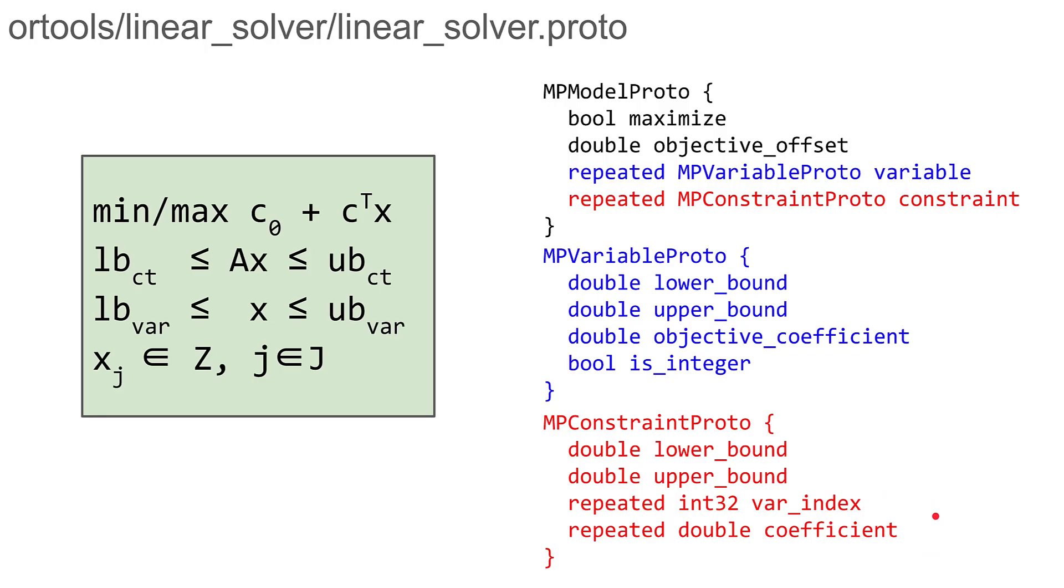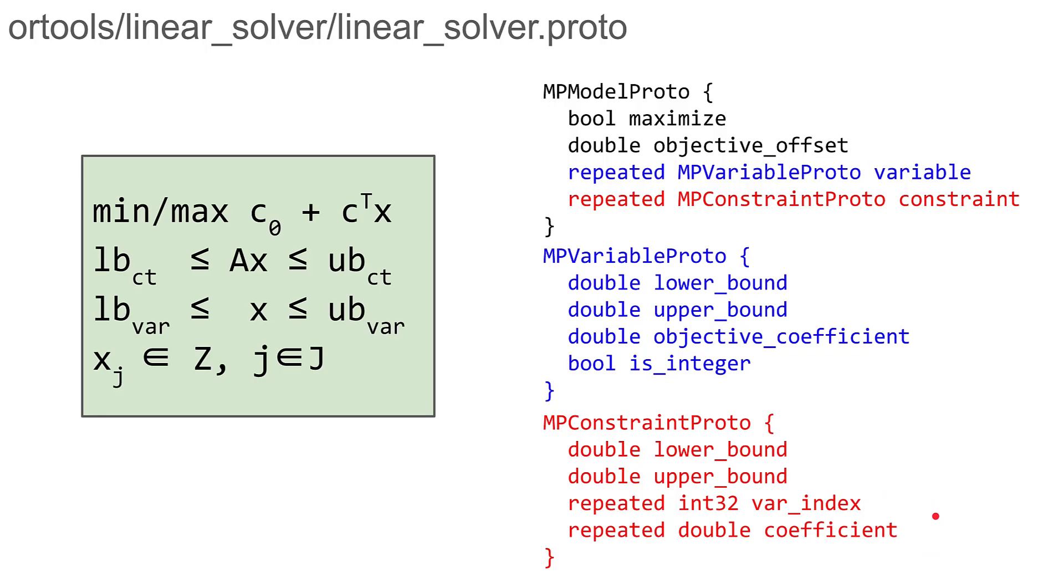So all of this together defines a MIP. For example, max 2x0 plus x1 such that x0 plus x1 equals 1 and both variables are binary corresponds to this proto. You could just open your text editor, manually type this in, and this would be a MIP which can be solved with OR-Tools. Of course normally you don't do it by hand but programmatically, and there is an API to fill those in.